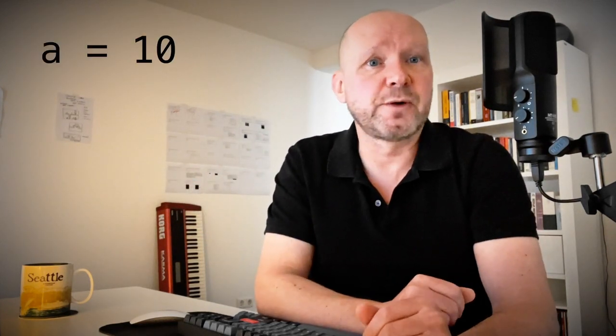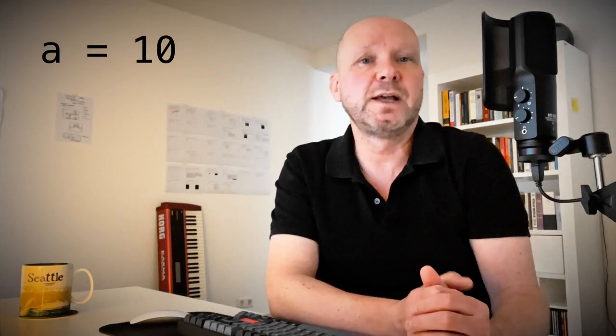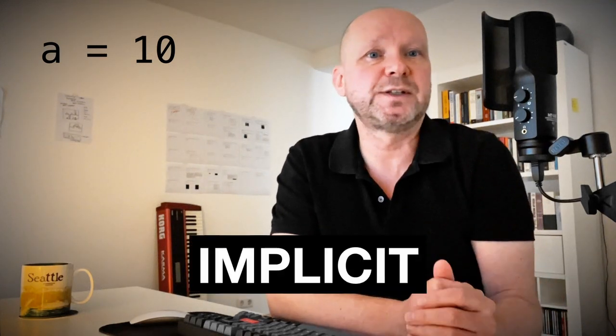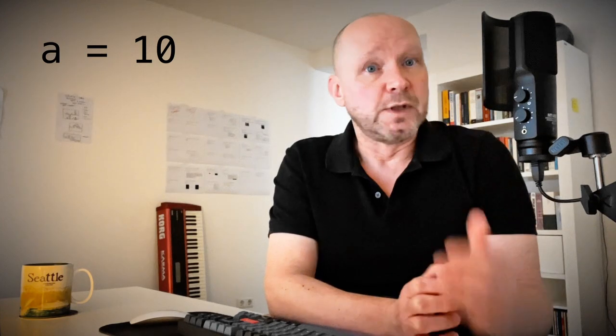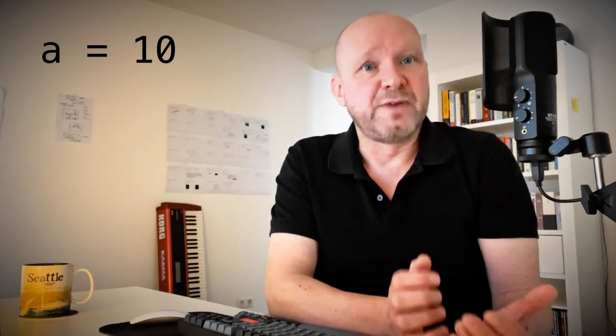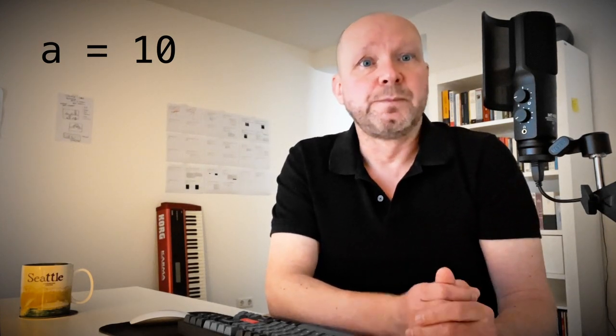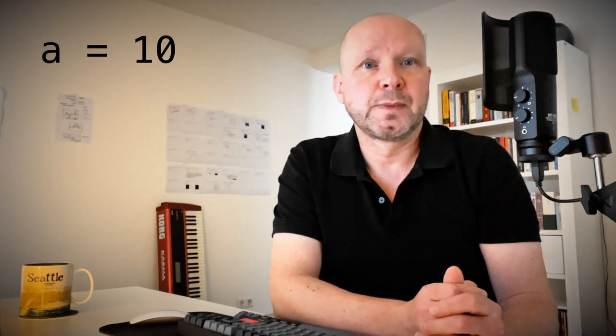When I started with Python, I thought that the fact that you can write A equals 10 without specifying its type is why it is called a dynamic language, but it is not. Dynamic type checking means that types are checked at runtime. Creating a variable without specifying its type is known as implicit typing. The type is inferred from the value 10 — A will be an integer. So, Python is implicitly and dynamically typed.